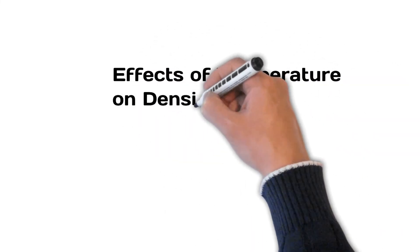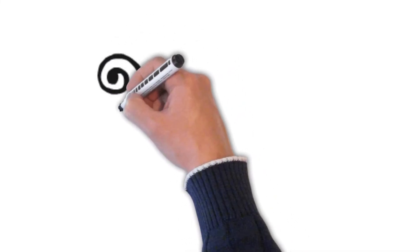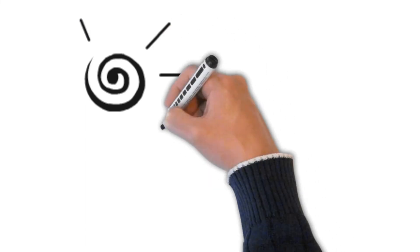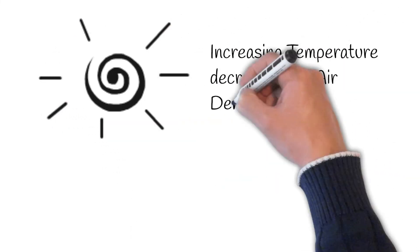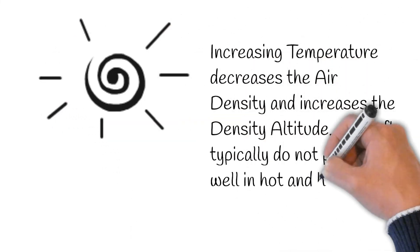Next, we will look at how temperature affects density altitude. Increasing temperature decreases the air density and increases the density altitude. Aircraft typically do not perform as well in hot and humid temperatures.